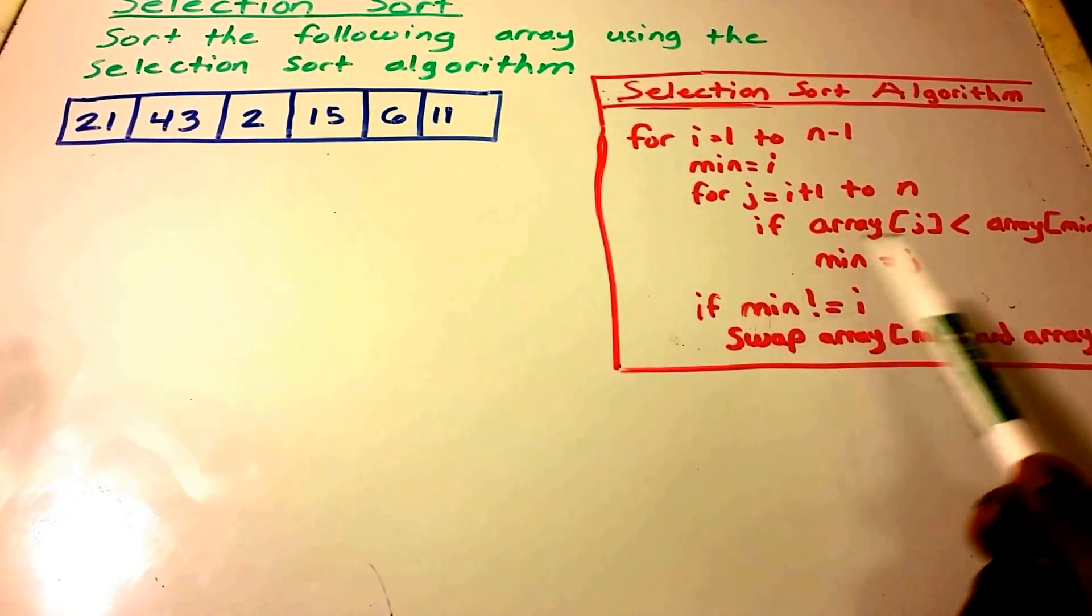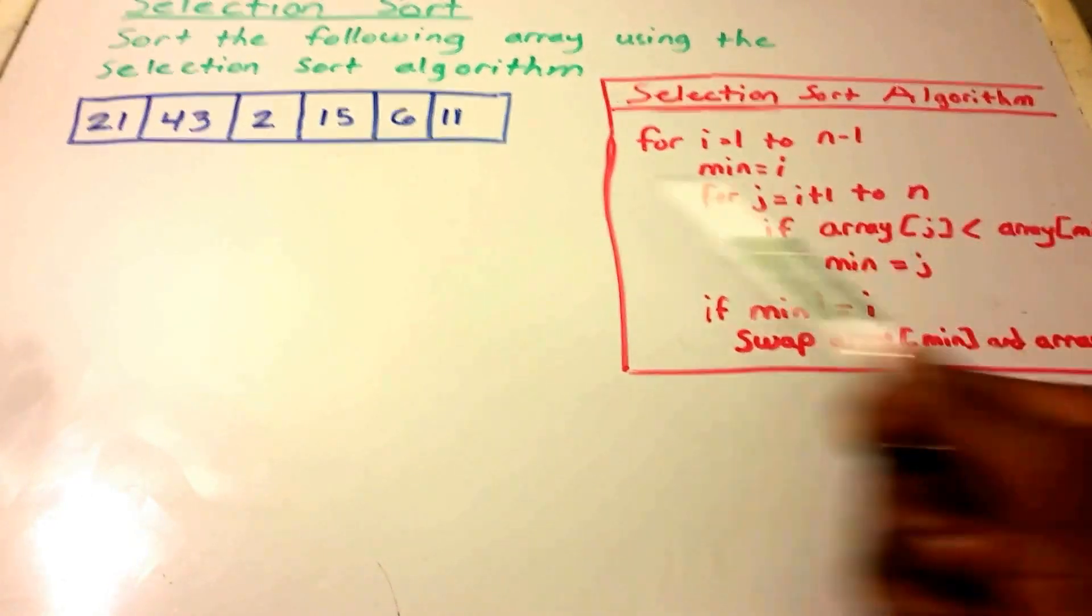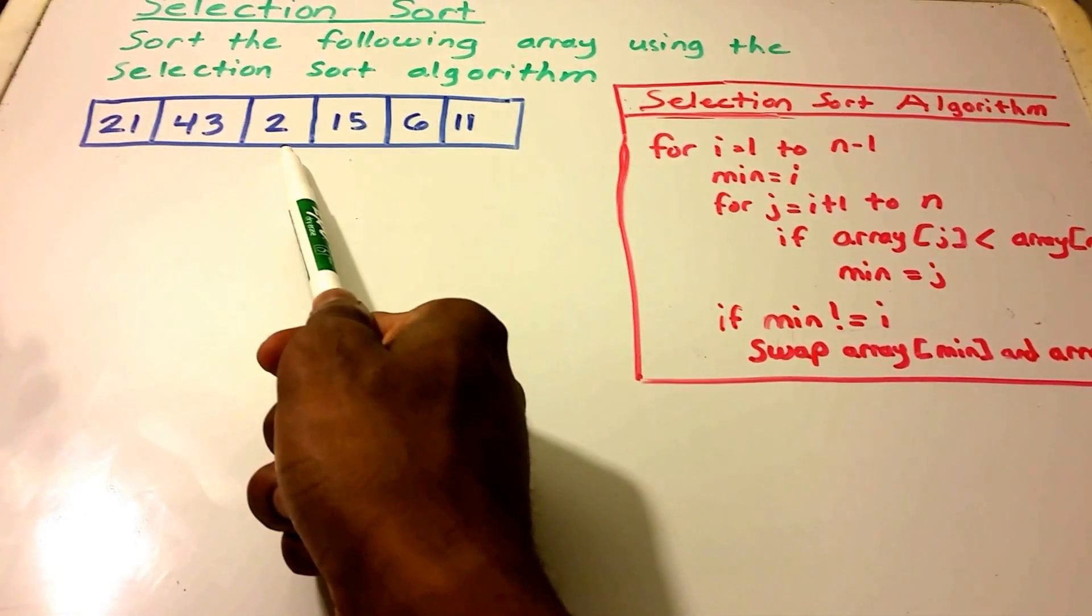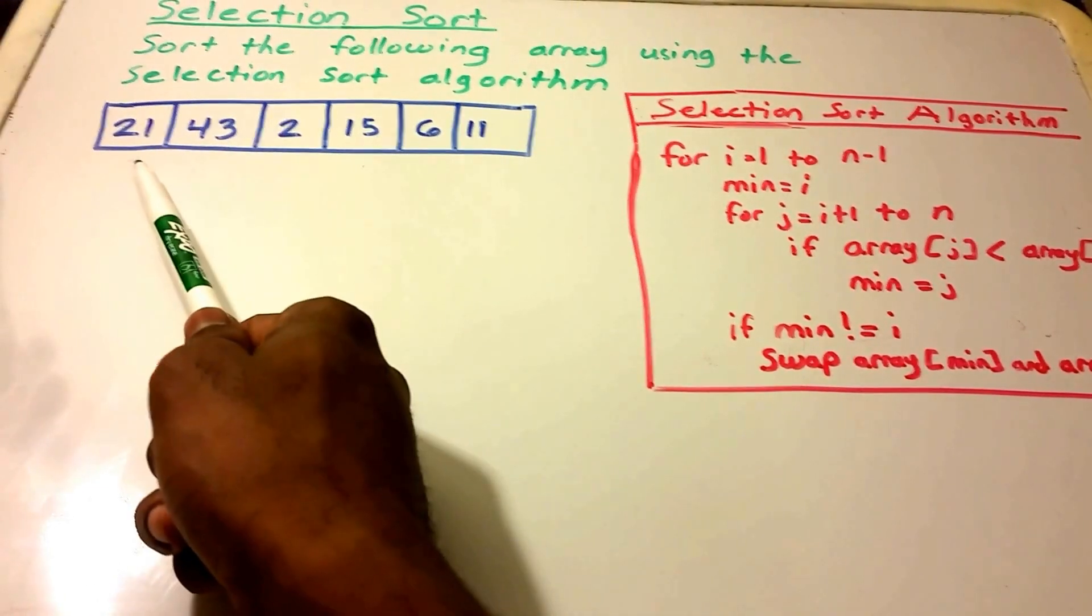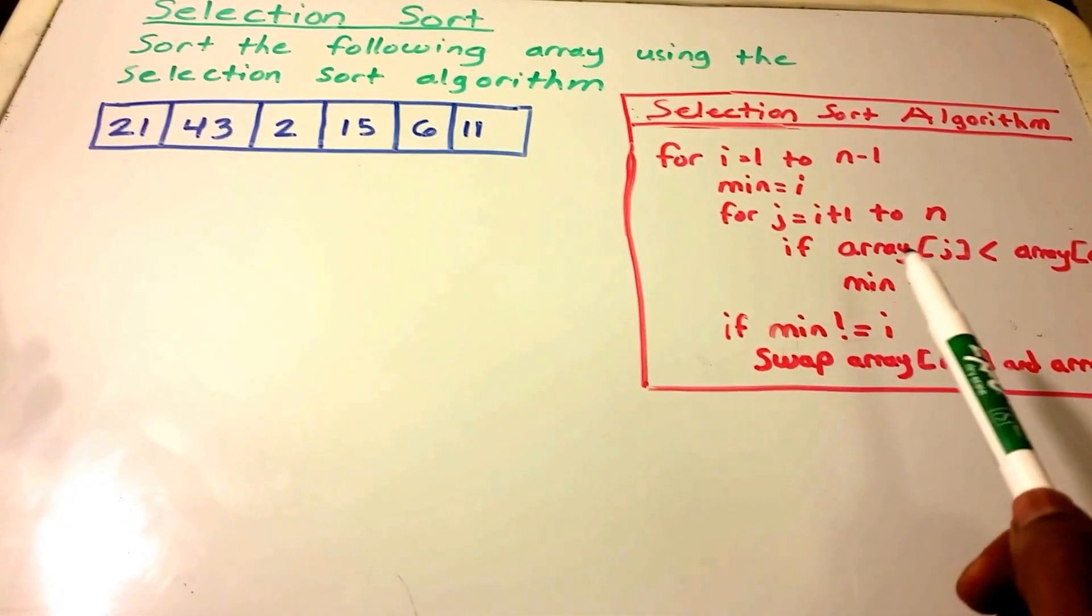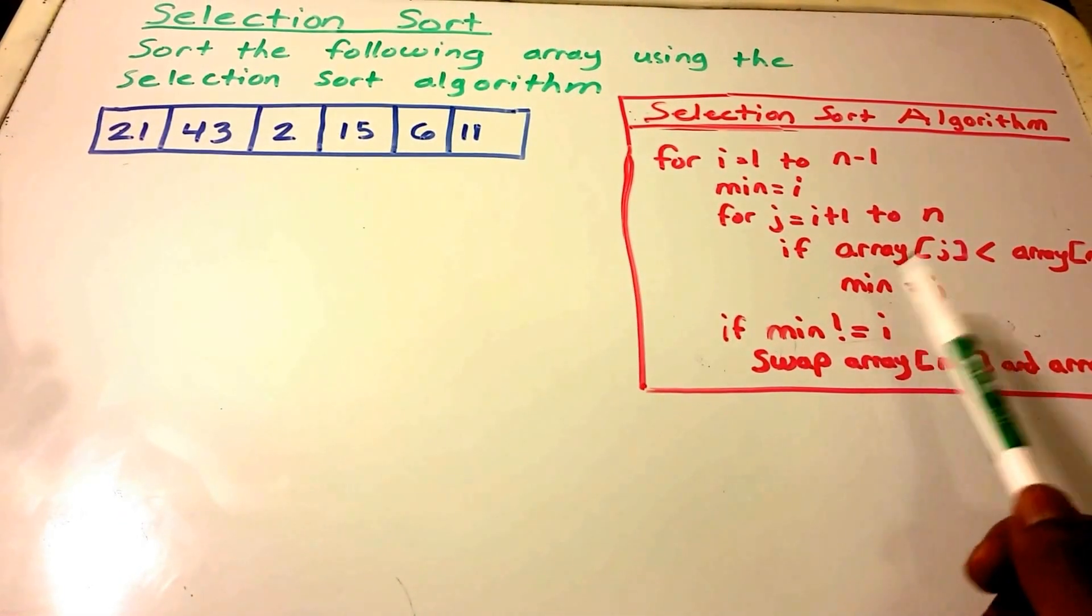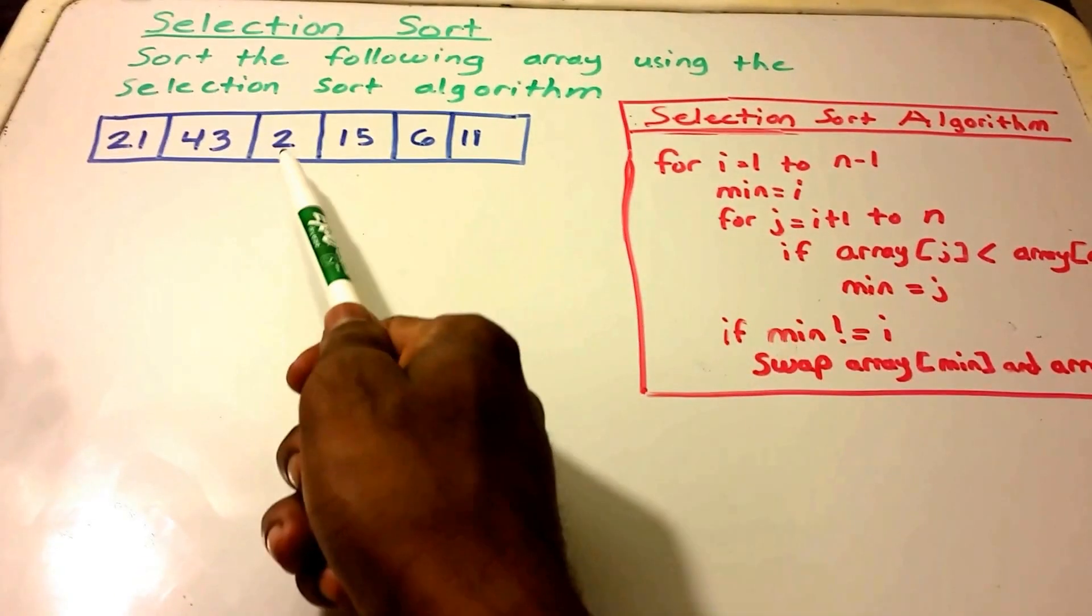Instead, we're going to go back here inside the loop, j is going to increment by 1, and it's going to go to 2. Now we're going to check, is 2 less than 21? Yes, it is. So now, our new index, our new minimum has a new index, and it's at position j, which is where our 2 is.